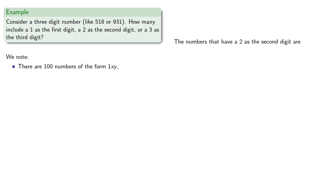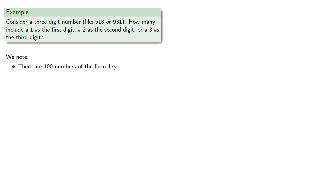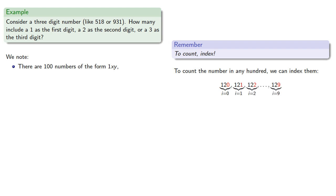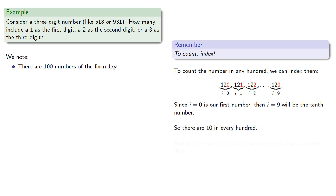The numbers that have 2 as a second digit appear in every hundred from 100 to 900. To count the number in any hundred, we index on the last digit: 120 is i equals 0, 121 is i equals 1, and so on. Since i equals 0 is our first number, i equals 9 will be the 10th number, so there are 10 in every hundred. With 9 hundreds, there are 10 times 9, or 90 numbers, with 2 as the second digit.